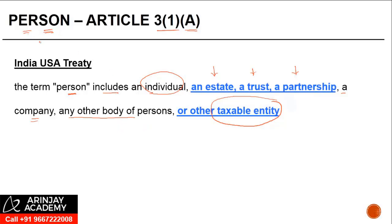What this means is that if you qualify as a person, then you need to see whether you qualify as a resident or not. If you qualify as a resident, then you are entitled to the benefit of the treaty.